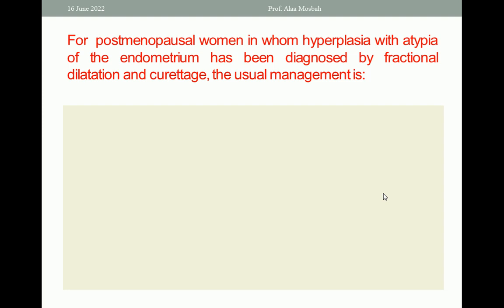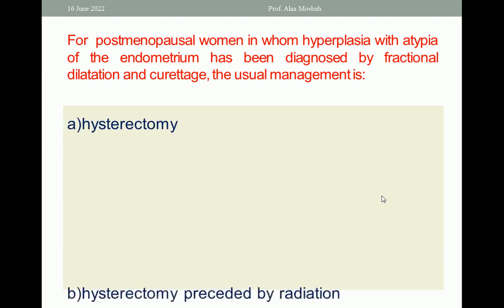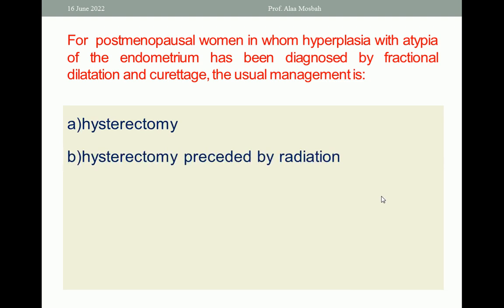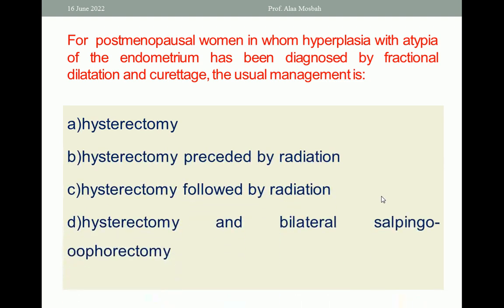For a postmenopausal woman in whom hyperplasia with atypia of the endometrium has been diagnosed by fractional dilatation and curettage, the usual management is: A. Hysterectomy; B. Hysterectomy preceded by radiation; C. Hysterectomy followed by radiation; D. Hysterectomy and bilateral salpingo-oophorectomy. The one best response is hysterectomy and bilateral salpingo-oophorectomy.